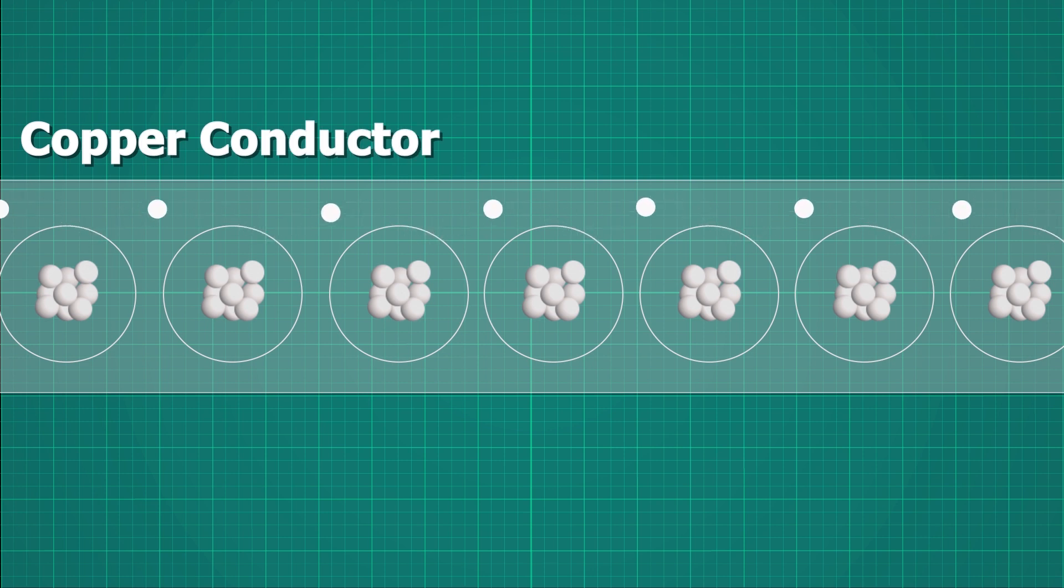This is what we call current flow. That is why copper is a good conductor of electricity.